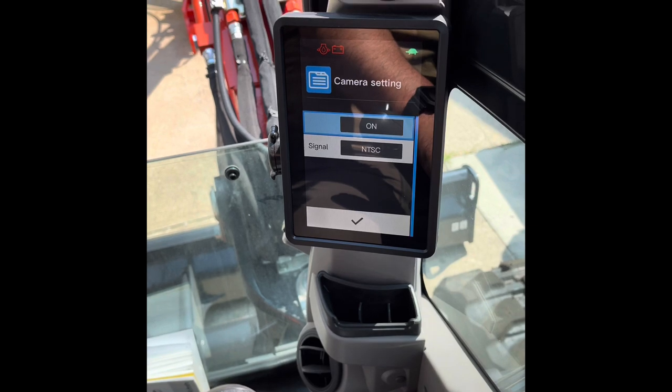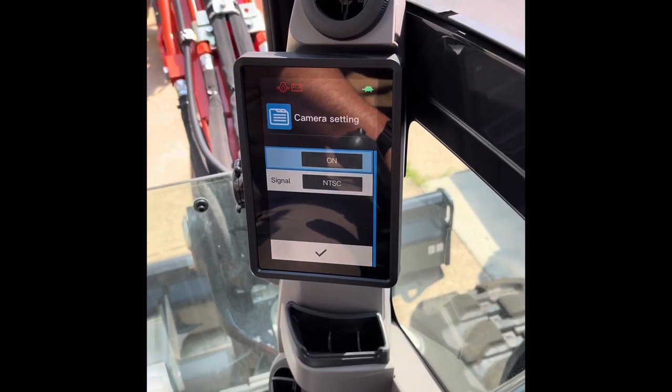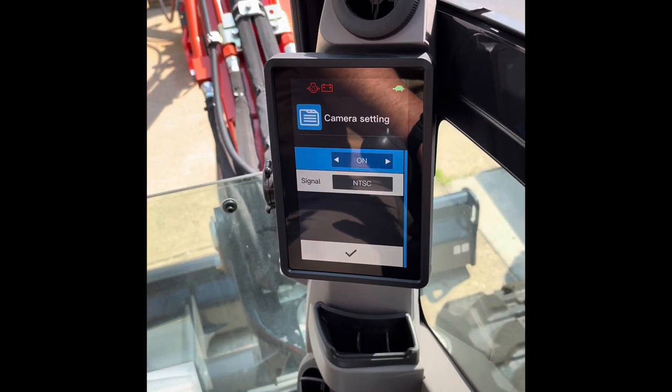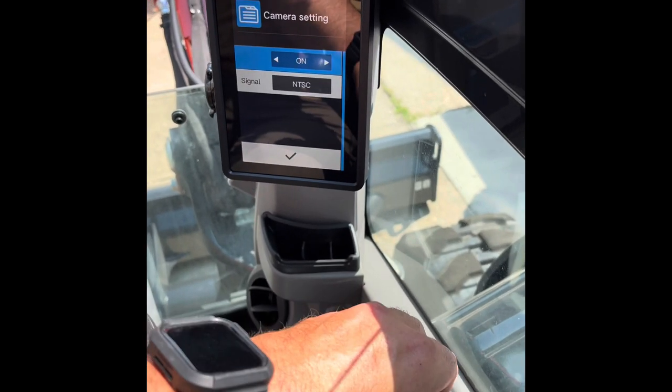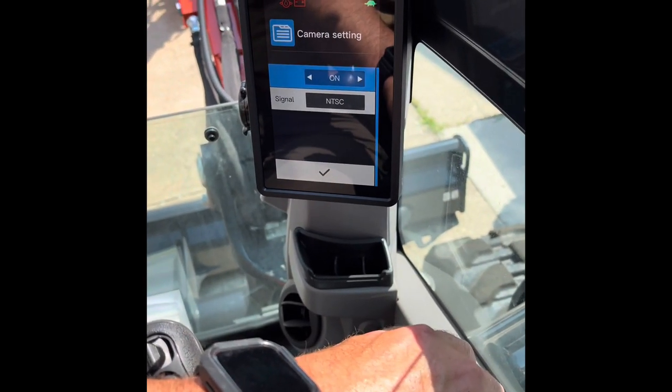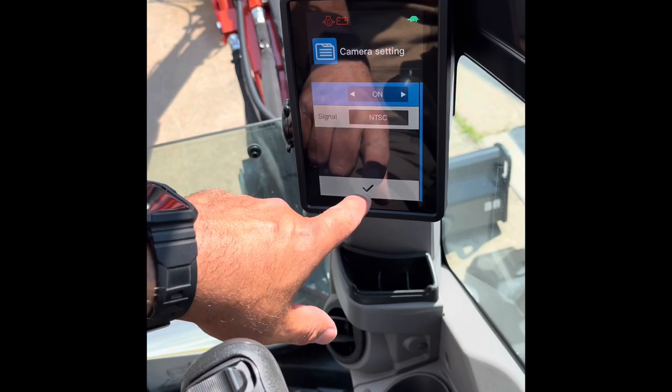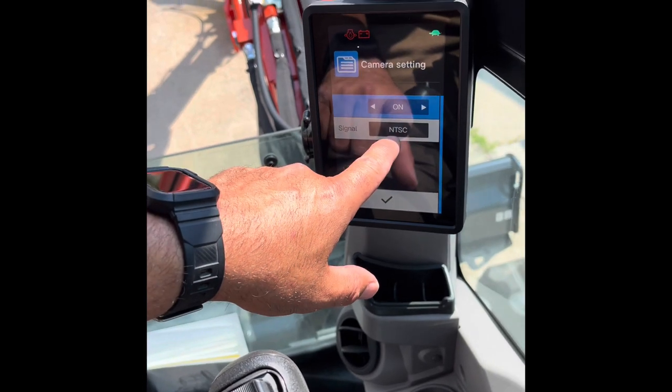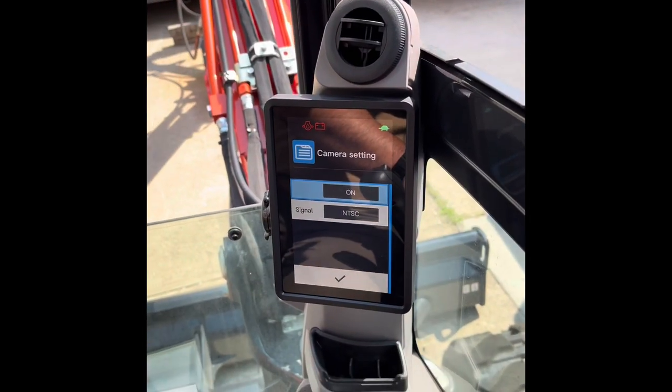Because this didn't come factory installed with one, this was actually set to Off. So when you highlight it and depress, you know, press down on the toggle switch, you can rotate it. And then once you hit On, you would finish with the check mark. Signal is NTSC, and then you back out of everything.